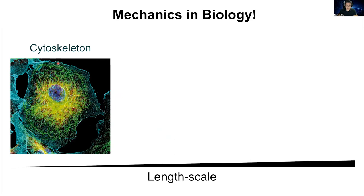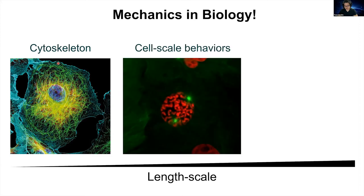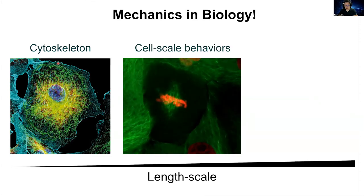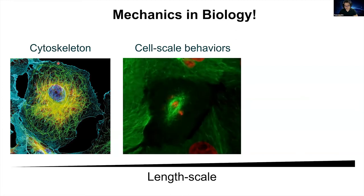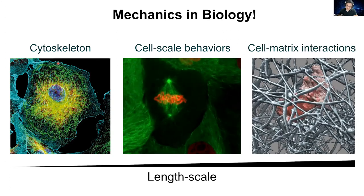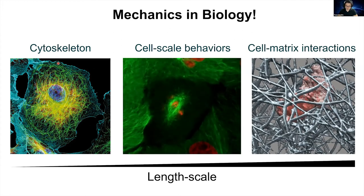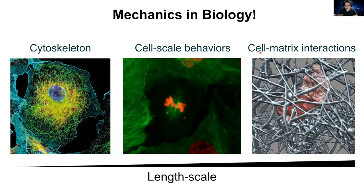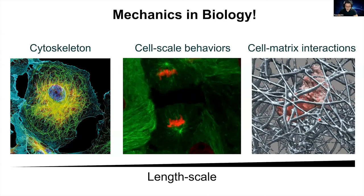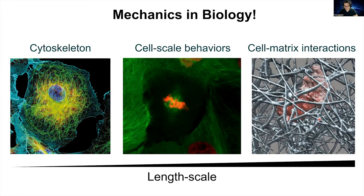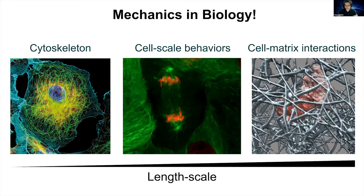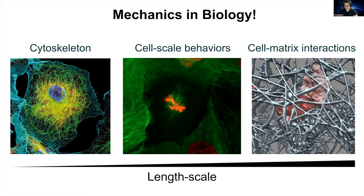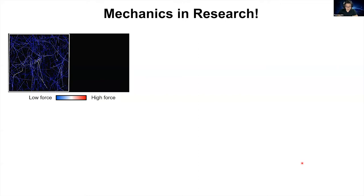These mechanical forces for biological processes are mostly generated by the polymeric structure in cells called the cytoskeleton. The cytoskeleton helps cells generate mechanical force, and those forces can be translated to the cellular level to facilitate many cell-scale behaviors such as cell migration and cell division. But mechanical forces can be translated to even larger scales. Most cells in physiological conditions are surrounded by a very dense polymer matrix called the extracellular matrix. Cells deform and remodel this surrounding extracellular matrix for various biological processes, such as wound healing and cancer metastasis.